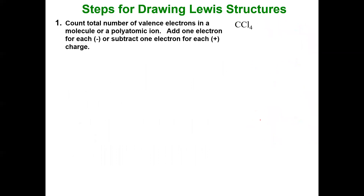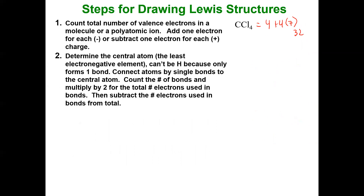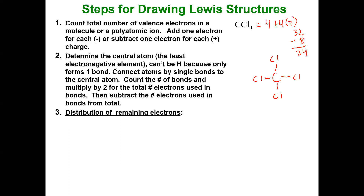Next, carbon tetrachloride. Count total valence electrons: carbon has four, and there are four chlorines each with seven, giving 28 plus 4 equals 32 valence electrons. Who is furthest from fluorine? Carbon — so carbon is the central atom with four chlorines as exterior atoms. Connect all four chlorines to carbon with single bonds: four bonds use eight electrons. That leaves 24 valence electrons to distribute.